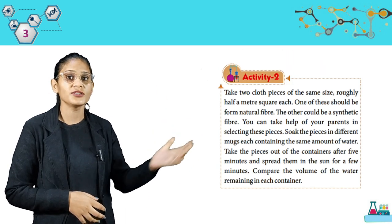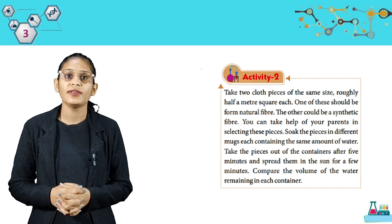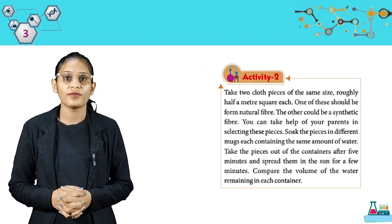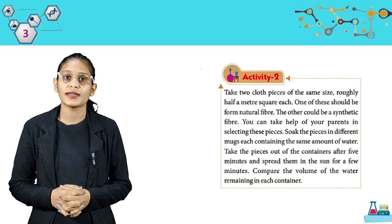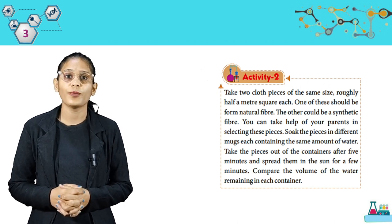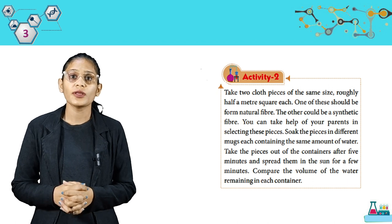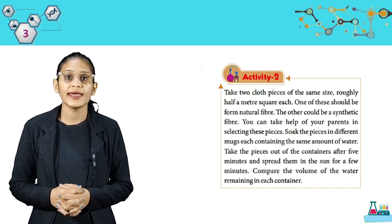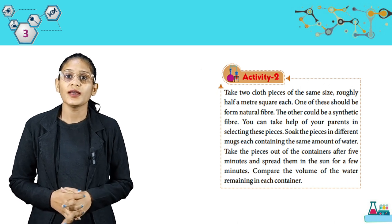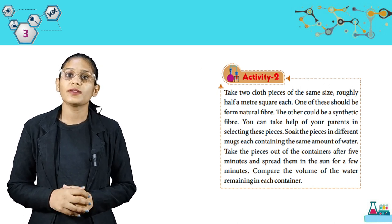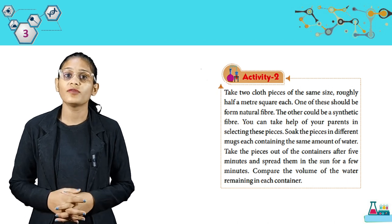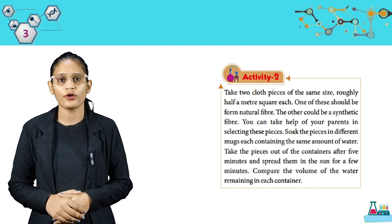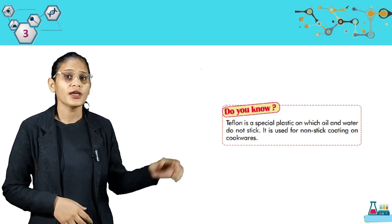We have an activity, students. Take two cloth pieces of the same size, roughly half a meter square each — one from natural fibers and one from synthetic fibers. You can take help of your parents in selecting these pieces. Soak the pieces in different mugs each containing the same amount of water. Take the pieces out after five minutes and spread them in the sun. Compare the volume of water remaining in each container. You can perform this activity at home with the help of your parents.